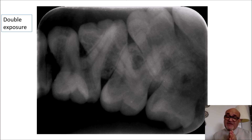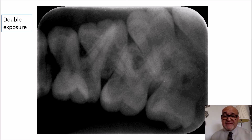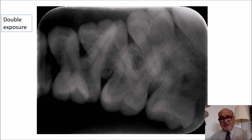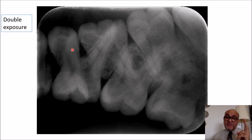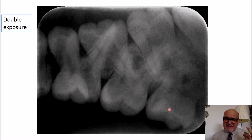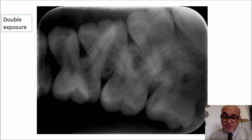Another case is where you double-expose your sensor. This happens with phosphor plates — you place the plate in the patient's mouth, forget to process the image, and then expose it again. You end up with a radiograph that has been double exposed, as we can see here — one image for the mandible and one for the maxilla overlapping — and it cannot be traced properly.